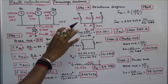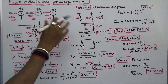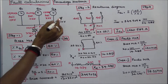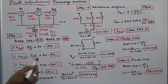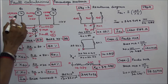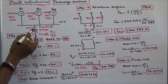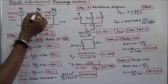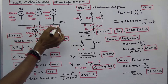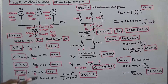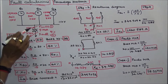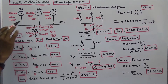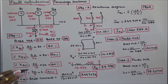In this class, we work out one problem on symmetrical fault calculation. A single line diagram of a power system is shown in the figure. This system consists of three generators and one transformer. The three generators are connected to an 11 kV bus bar. The first question is: if a fault occurs at the low voltage side of the transformer, determine the fault MVA.